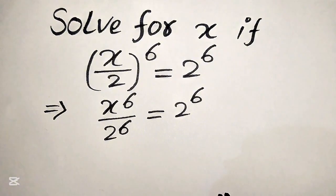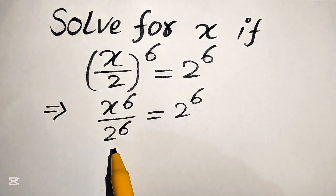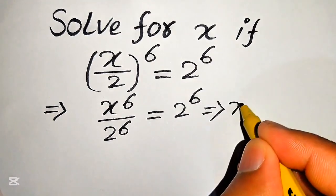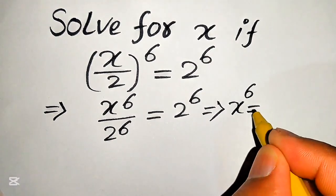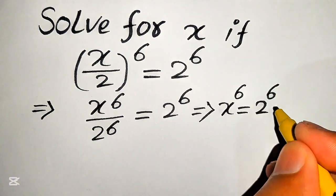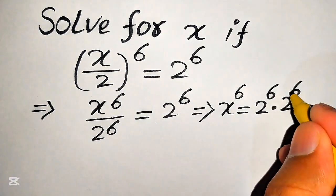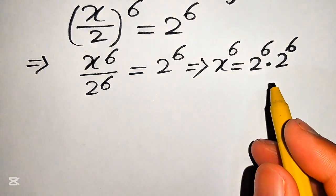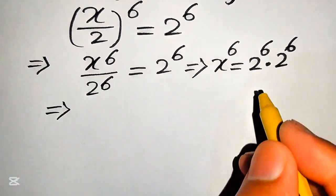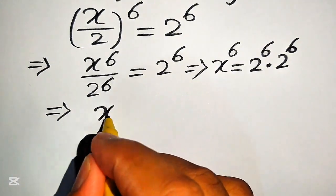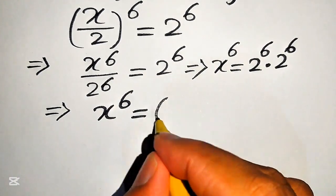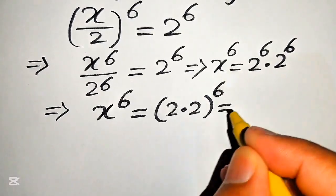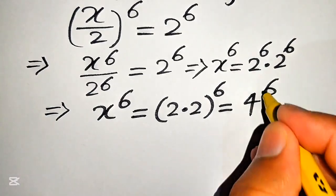Now in the next step we need to move the term 2 to the power of 6 to the right hand side, so it will be written as x to the power of 6 is equals to 2 to the power of 6 multiplied by 2 to the power of 6. Both values have the same exponent so we combine them: x to the power of 6 is equals to 2 multiplied by 2, which gives 4 to the power of 6.